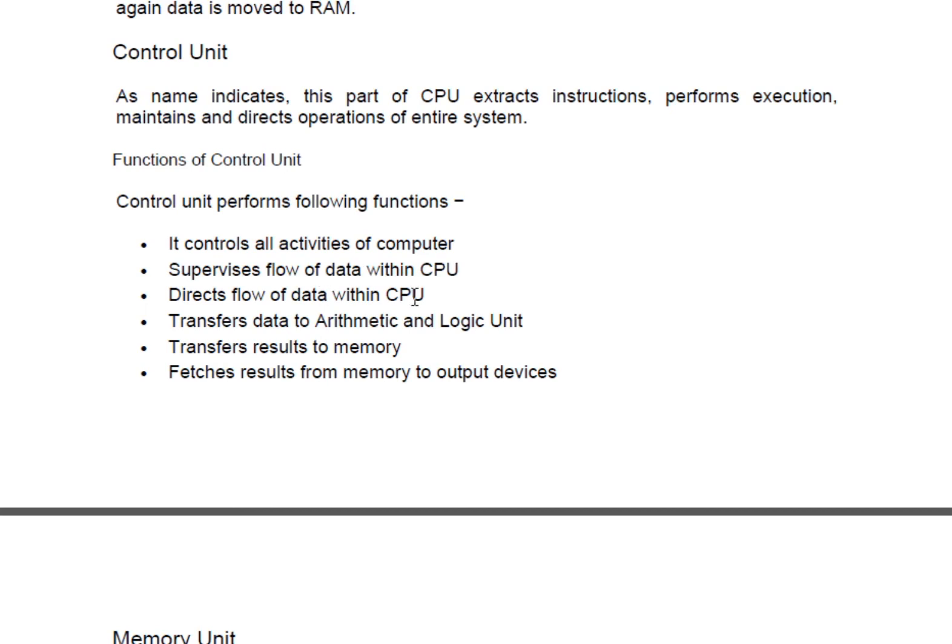Sometimes it is possible that particular information or an instruction can remain within the CPU only until its processing is done — this is known as a round-robin mechanism. Also, to solve a particular instruction step-by-step, it may be necessary to transfer that instruction to the arithmetic and logic unit again. So the control unit handles transferring the data to the ALU and transferring the result to memory.